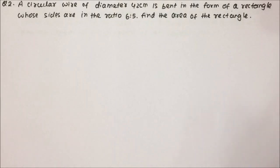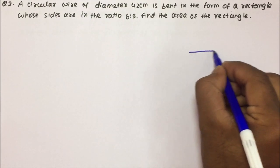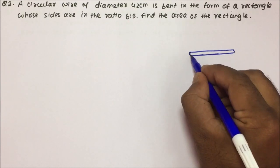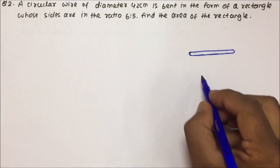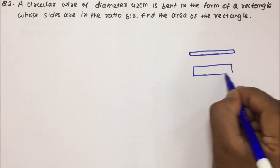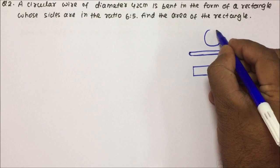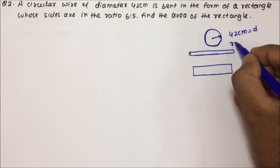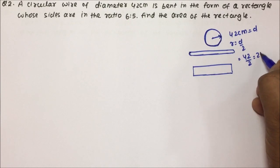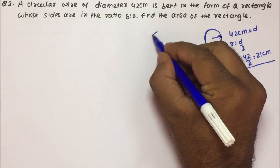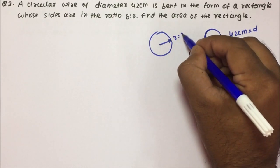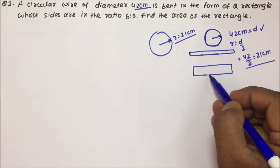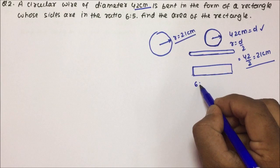Now moving towards question number 2. The question is: a circular wire of diameter 42 centimetres is bent in the form of a rectangle whose sides are in the ratio 6 is to 5. If diameter is 42 centimetres, then the radius will be diameter by 2 — so 42 by 2 equals 21 centimetres. The radius of the circular wire becomes 21 centimetres.